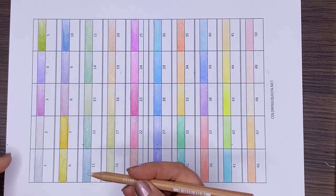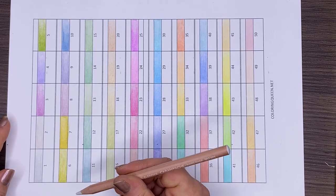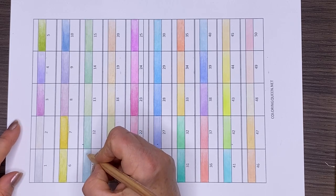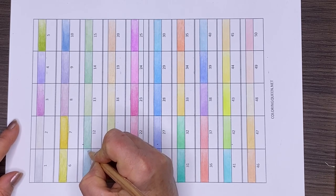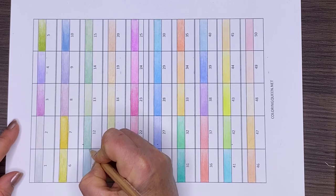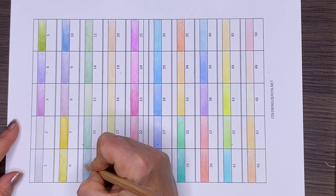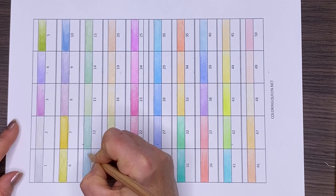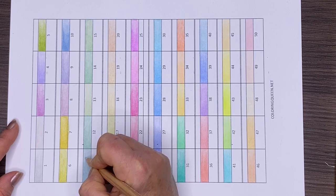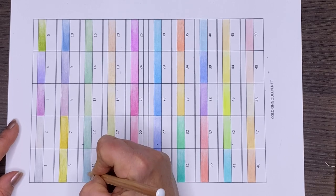I'm using my Caran d'Ache blender on this really toothy paper—it's the Art and Wash paper. I wanted to see how easy it would be to blend out these stroke marks, and it's easy peasy. That's it for the swatch. If you want to see the extended review, check out the link below.